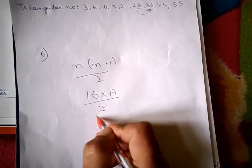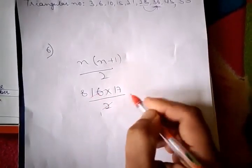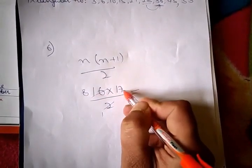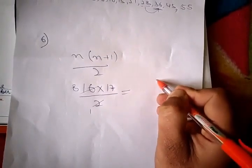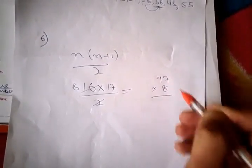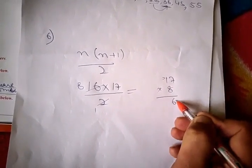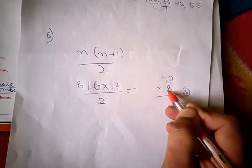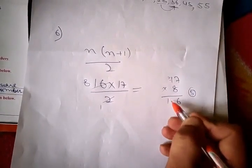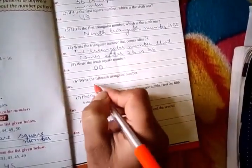Dividing 16 by 2 gives 8. Now we multiply 8 with 17. 8 times 7 is 56, so we write 6 and carry 5. 8 times 1 is 8, and 8 plus 5 is 13. That gives 136. So the 15th triangular number is 136.